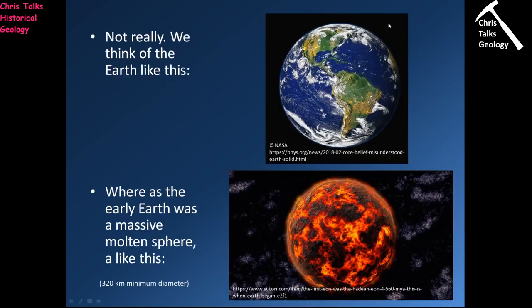When we think of the Earth, we do of course think of this. However, by the end of the accretionary phase, what we actually have is something like a sphere of magma. From the very centre of the Earth to the Earth's surface, it is nothing but silicate magma — everything is molten.